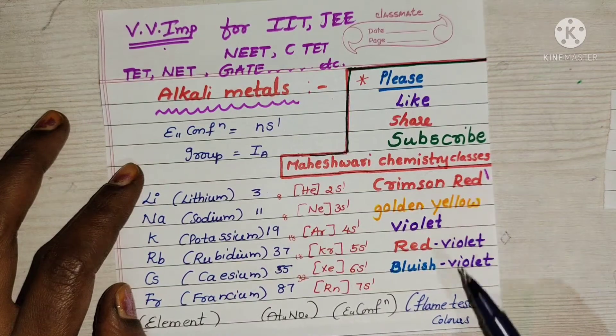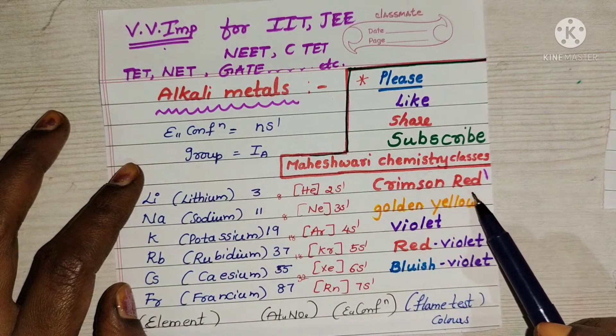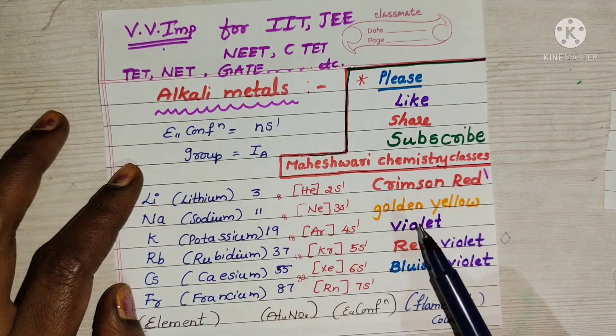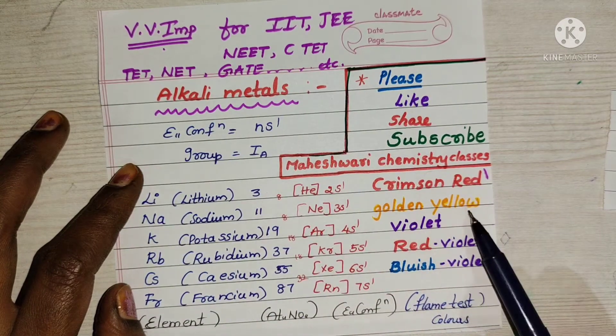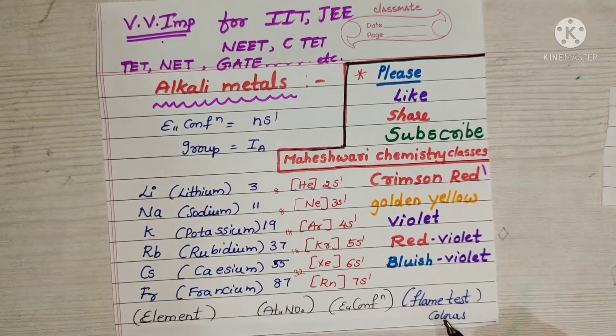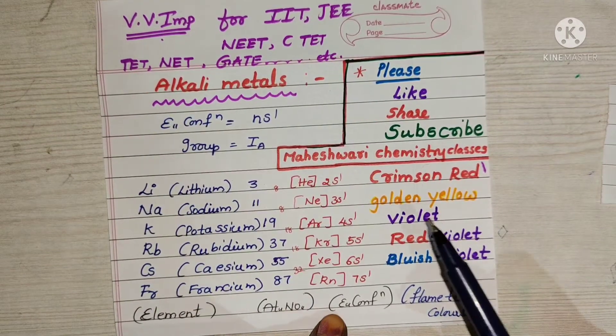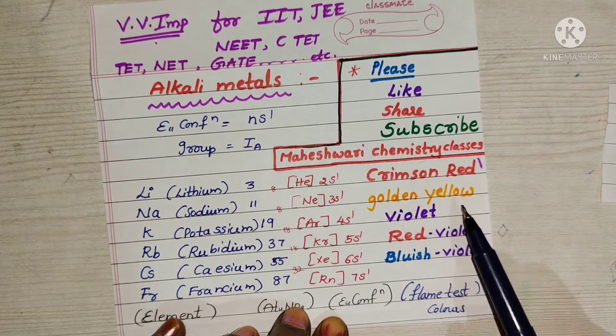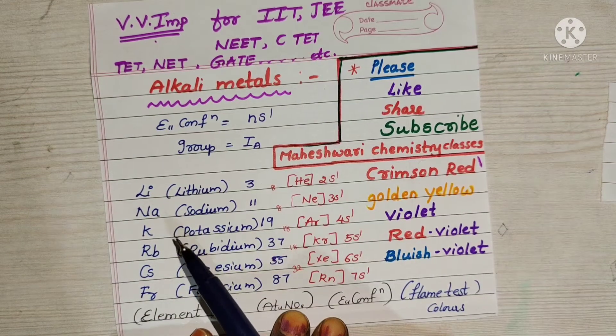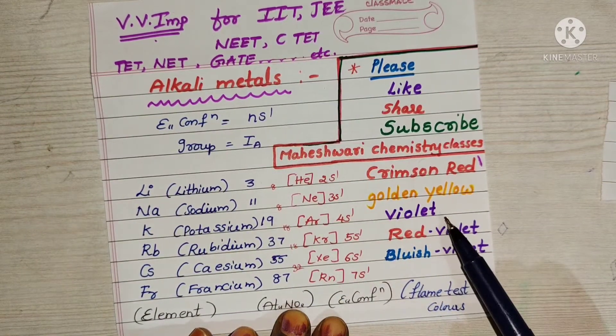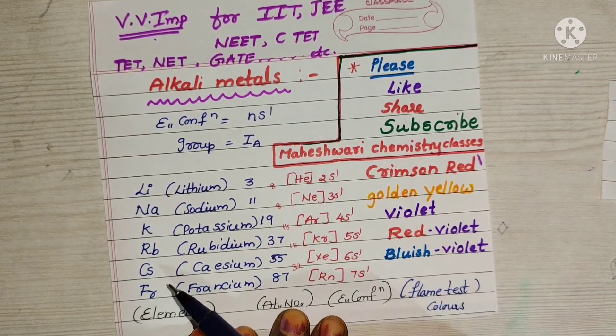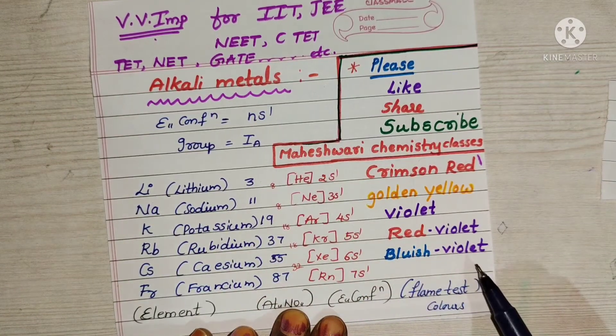Lithium in flame test gives crimson red. Based on that crimson red flame test color we may identify that the given metal is lithium. Sodium gives golden yellow flame test. Potassium gives violet flame, rubidium gives red-violet, cesium gives bluish-violet colors.